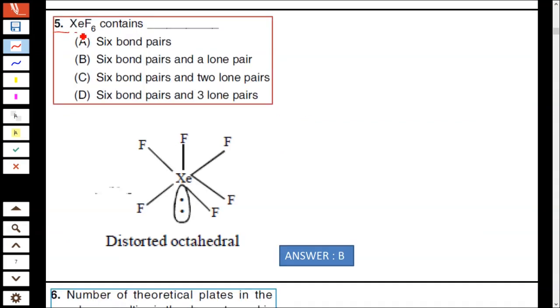Question number 5: XeF₆ contains... In xenon, it contains 8 electrons in the outermost shell. 6 electrons are shared by 6 fluorine atoms, and it has one lone pair of electrons. Hence it has a structure of distorted octahedral. If the lone pair was not present, it would be perfect octahedral structure. Due to the presence of lone pair-bond pair repulsion, the structure is distorted octahedral. Hence it contains six bond pairs and one lone pair.